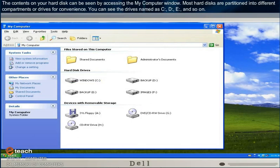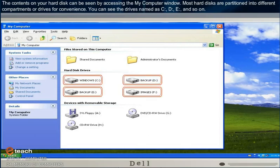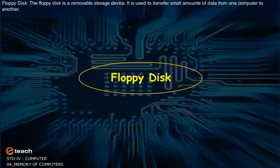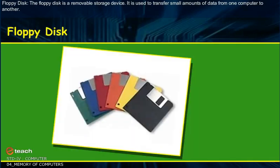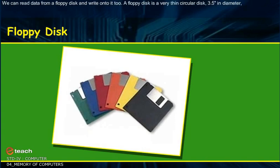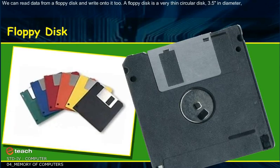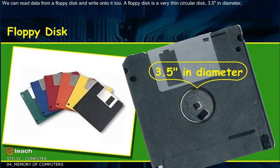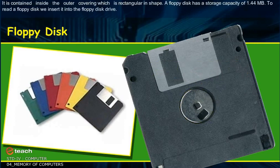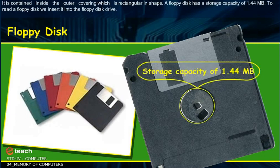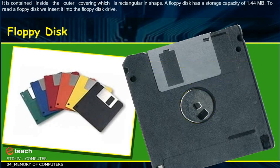You can see the drives named as C, D, E and so on. The floppy disk is a removable storage device. It is used to transfer small amounts of data from one computer to another. We can read data from a floppy disk and write onto it too. A floppy disk is a very thin circular disk, 3.5 inches in diameter. It is contained inside an outer covering which is rectangular in shape. A floppy disk has a storage capacity of 1.44 MB. To read a floppy disk, we insert it into the floppy disk drive.